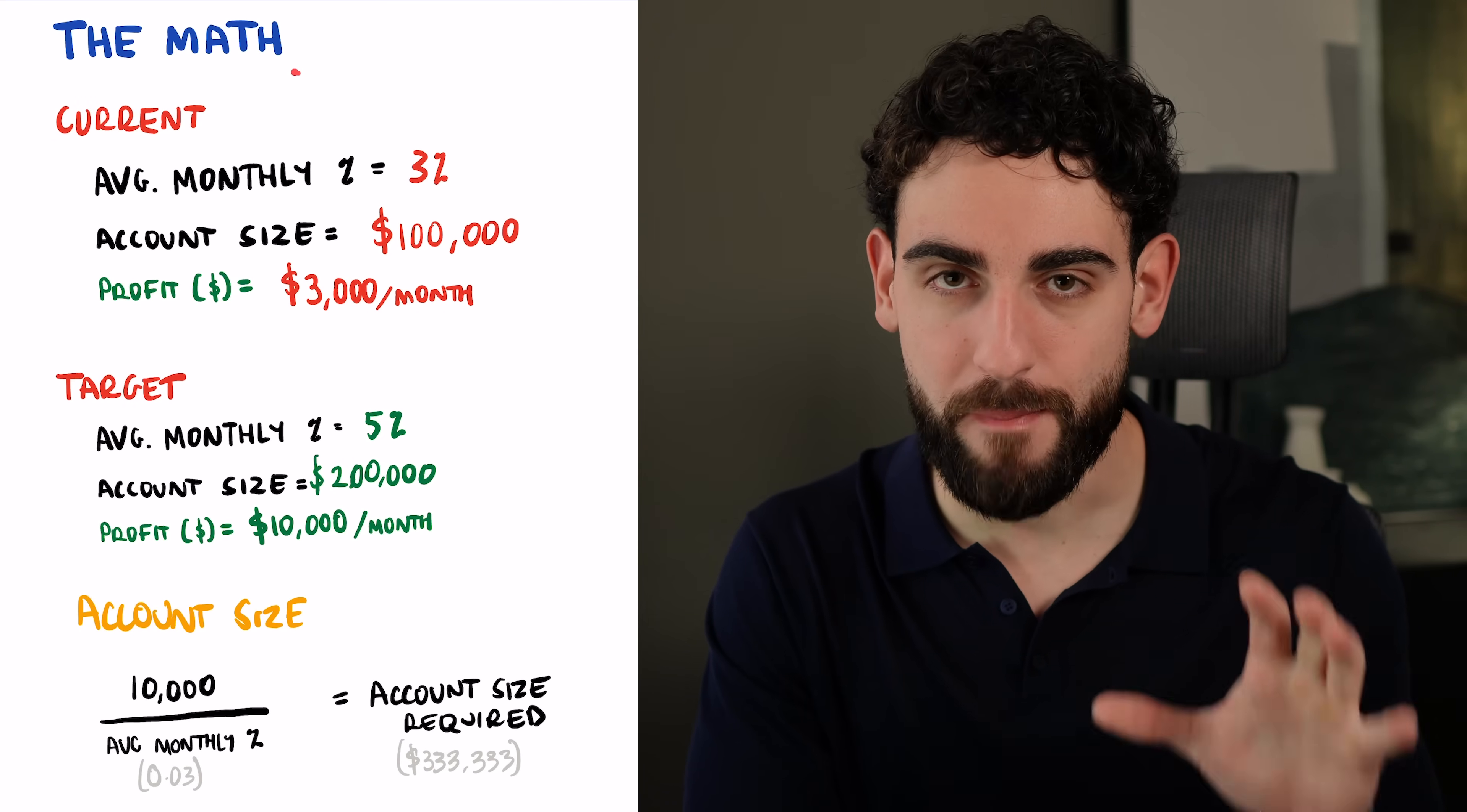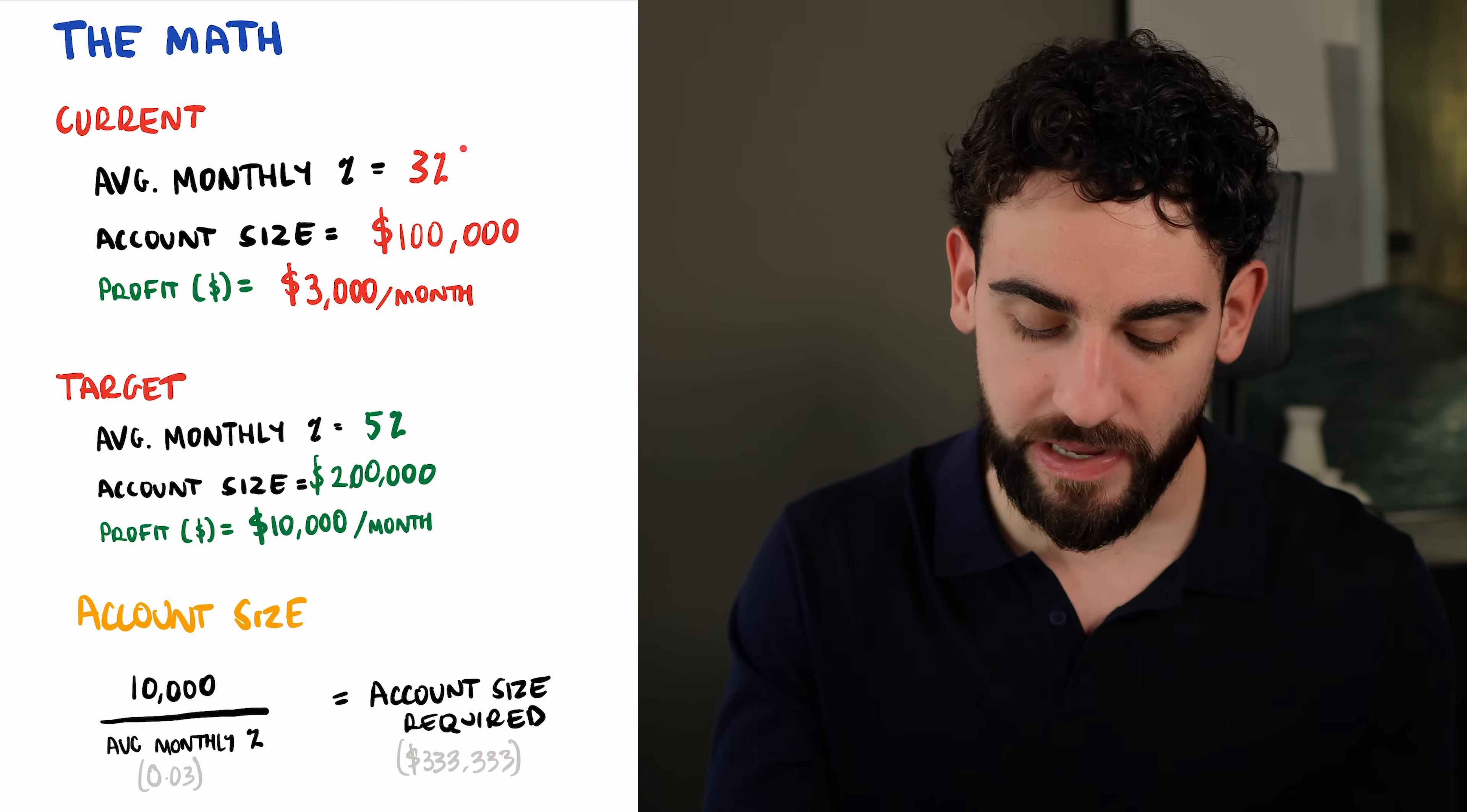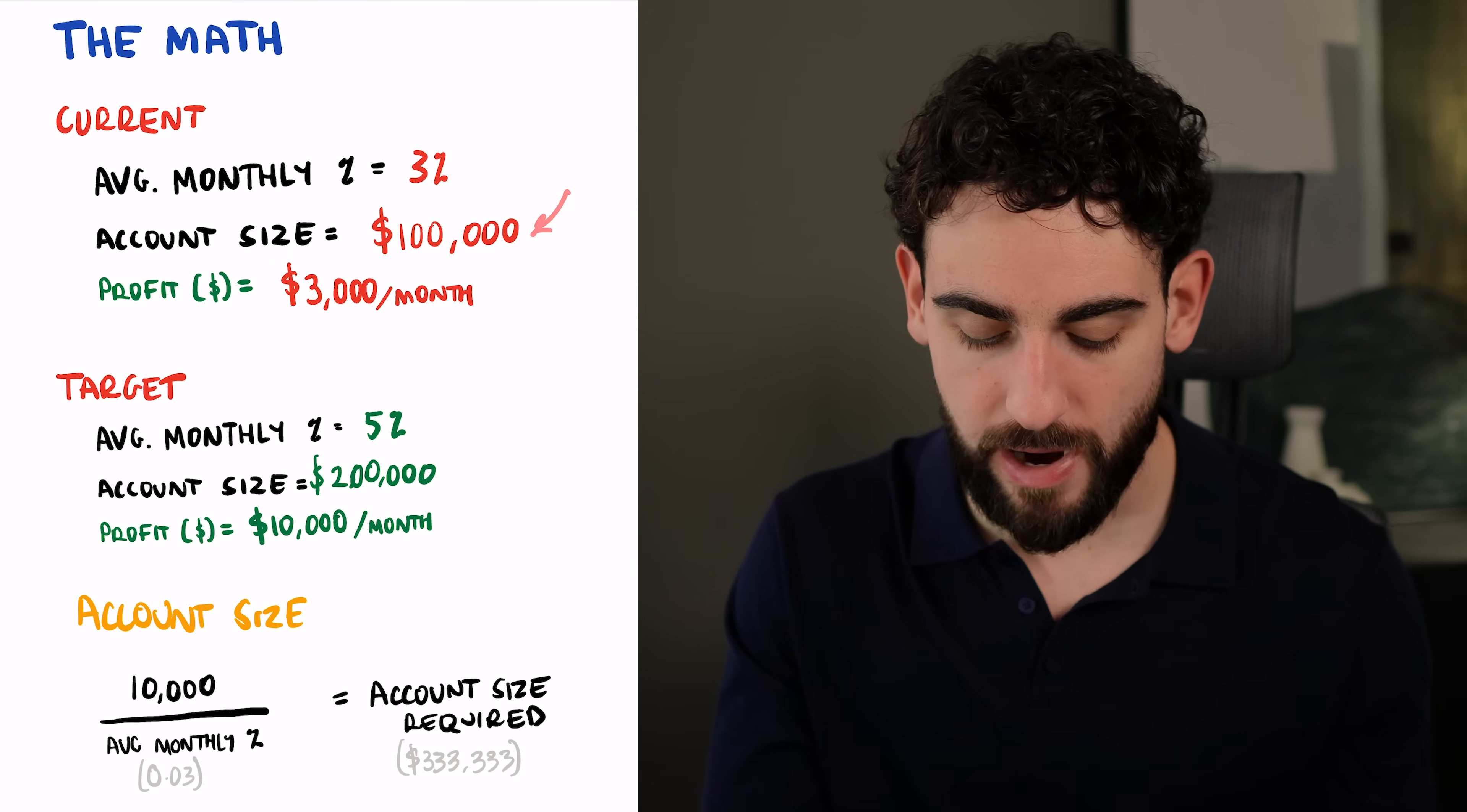Now, most traders never sit down and map out a clear path to getting them to the type of money they want to make as a trader. And as a result, most traders don't know where they are, they don't know where they're going, and they certainly don't have a strategy to get there. One of the wisest things you can do is sit down and do a little bit of math and figure out your current results, your average monthly percentage.